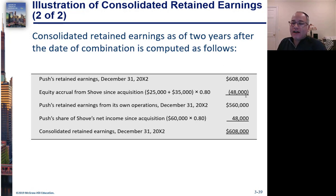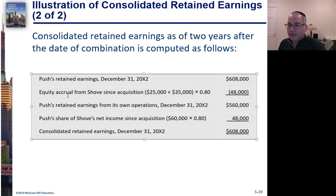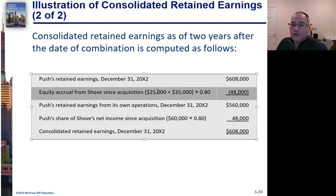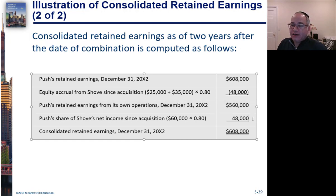It's very important to do this because companies don't always apply the equity method properly. They might use what's called the dirty equity method, where they don't adjust for differentials — we'll cover that in Chapters 4 and 5. Alternatively, they might use the cost method, similar to accounting for marketable securities, where income is only recorded when a dividend is received. In those cases, you'd have to undo whatever the company did in order to get the parent's retained earnings without the sub, then add their proper share of income from the sub to arrive at consolidated retained earnings.